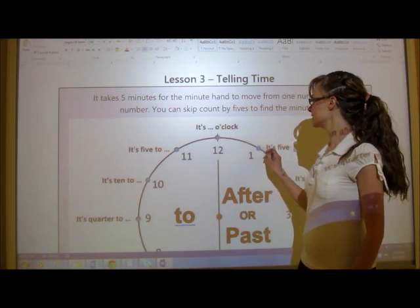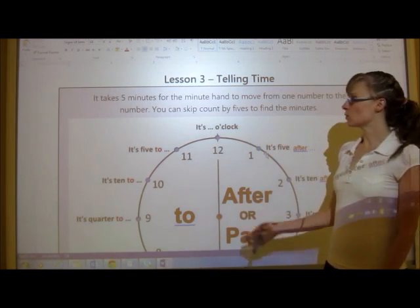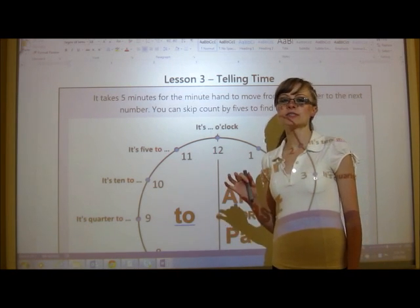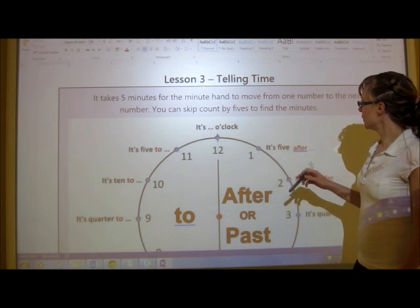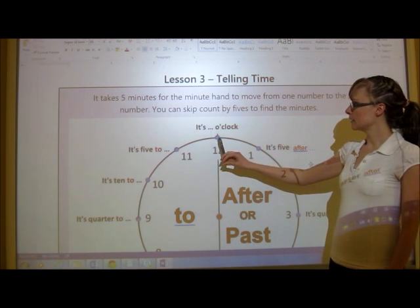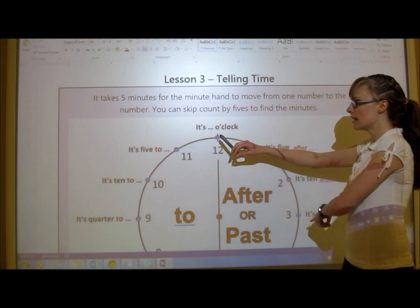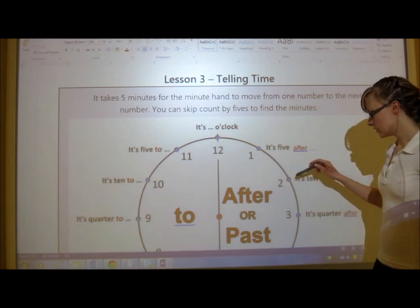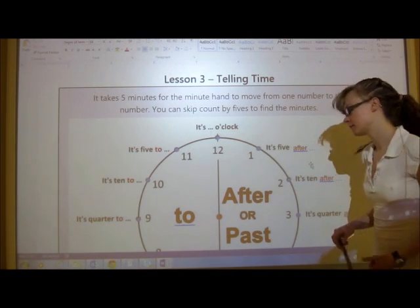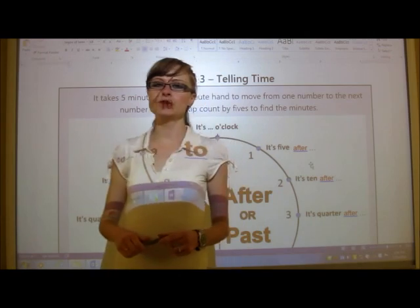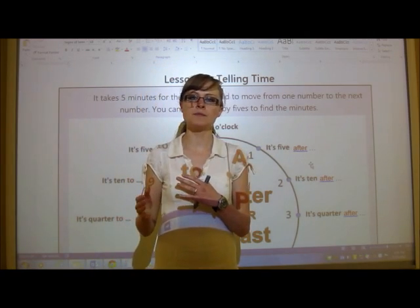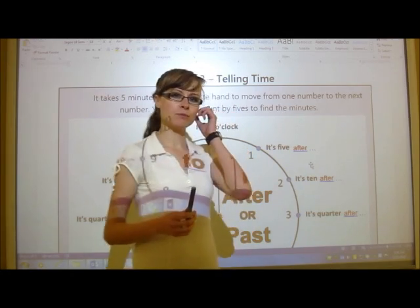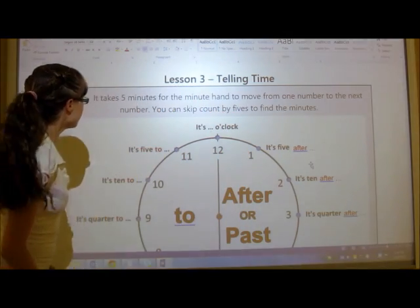And then another 5 kicks. And it continues on. So since it works that way, to find out what the minutes are on an analog clock, you can just skip count by 5s. So if I'm here and I want to skip count to the 3, I start at the 1 by saying 5, then I go to the 2, 10, go to the 3, 15.